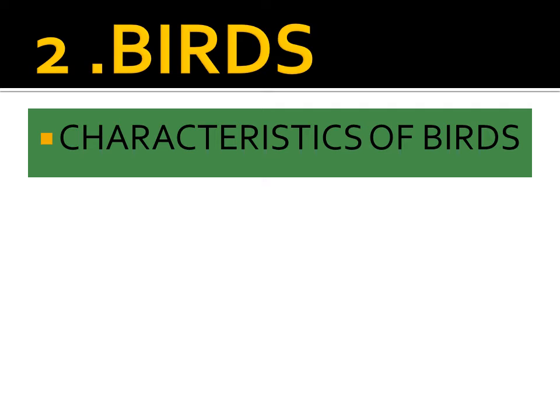Number four: they have wings — wings to fly. Number five: they have claws and talons. Number six: they are covered with feathers on their body. Lastly, they have beaks for feeding.